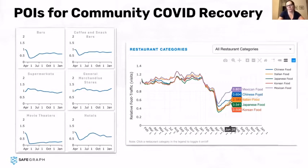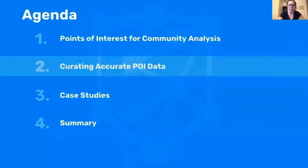There are a lot of different ways you can use POI data to analyze market and community impacts of COVID, like identifying where to cut costs and close a store location, or where to open a vaccination site. A lot of governments and financial analysts are now using SafeGraph data to help rebuild the economy and develop models for recovery. Now I'm going to talk a little bit about SafeGraph POI data specifically and how we curate it to be the most accurate places data possible for these mission-critical analyses.